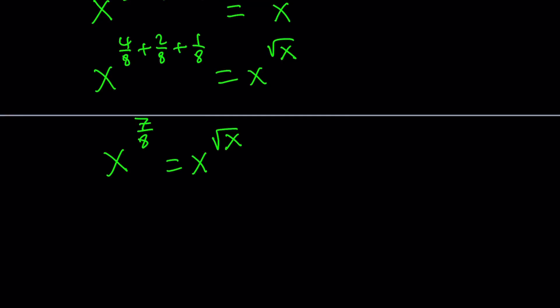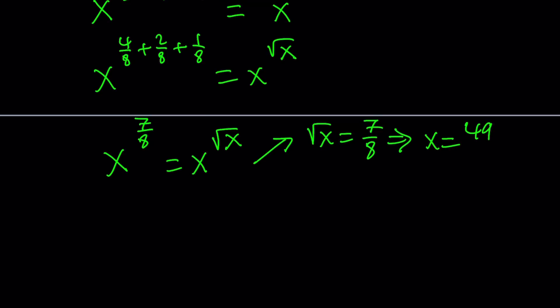We end up with a simpler equation. The bases are the same, so the exponents must also be the same. So we can say that square root of x equals seven over eight. If we square both sides, we get x equals 49 over 64, which is a positive number less than one.